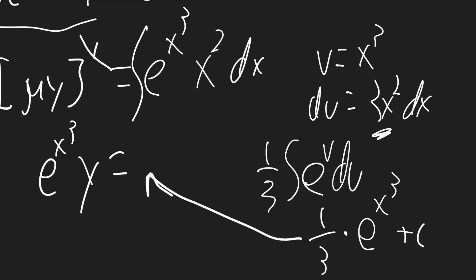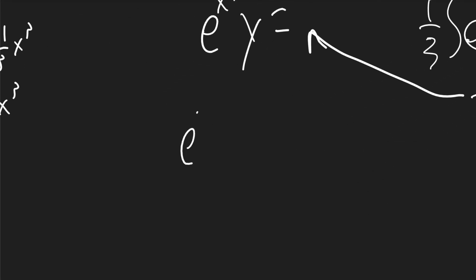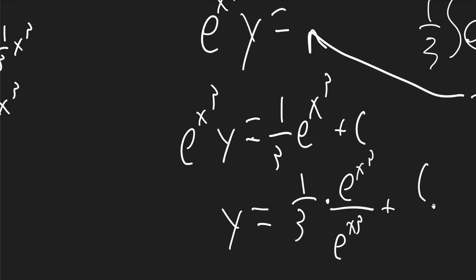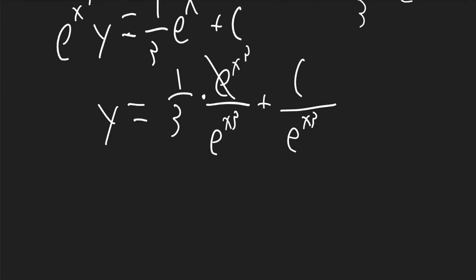So now I'll write that over here. It'll be e to the x cubed y is equal to 1 third e to the x cubed plus c. So y will be equal to 1 third times e to the x cubed over e to the x cubed plus c over e to the x cubed. Those terms will cancel. y will be equal to 1 third plus c times e to the negative x cubed. And that is your final answer.